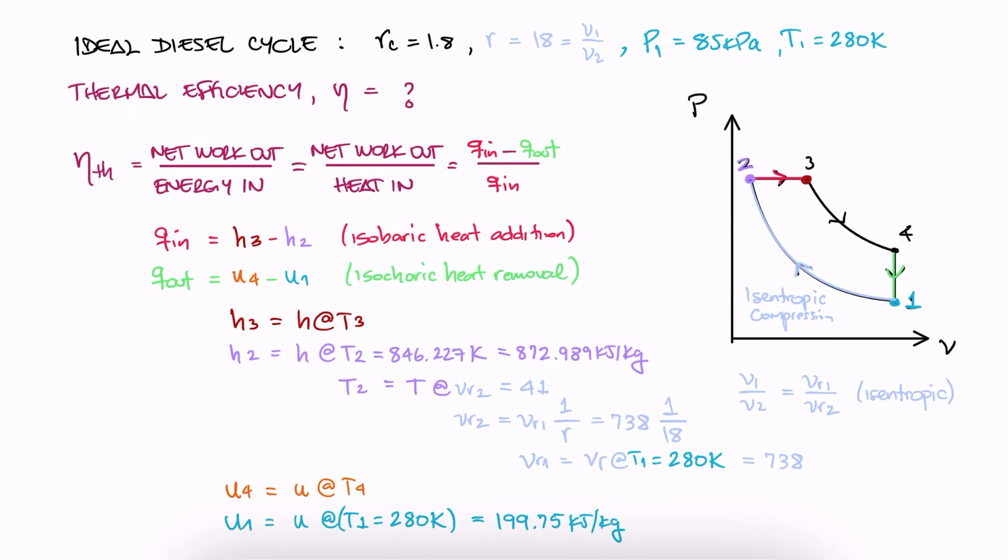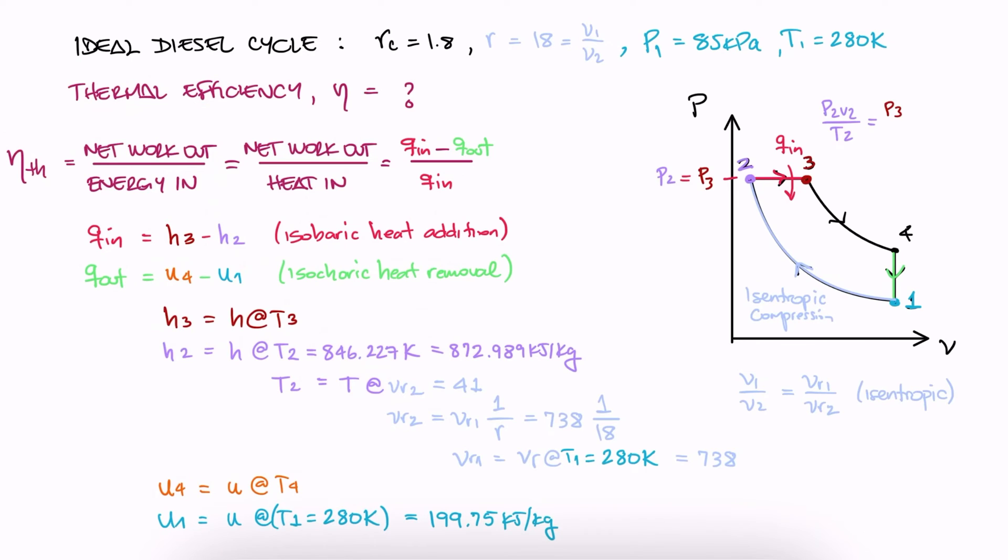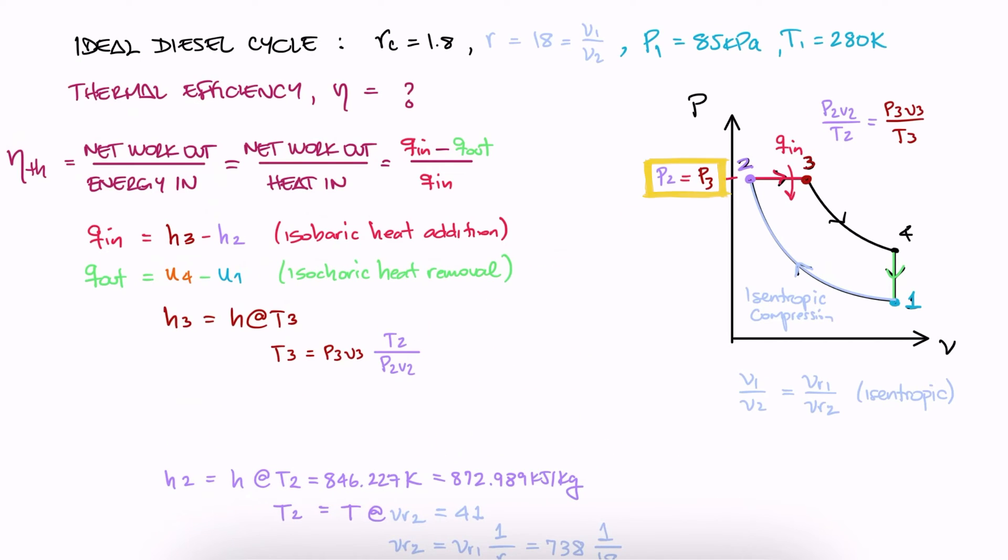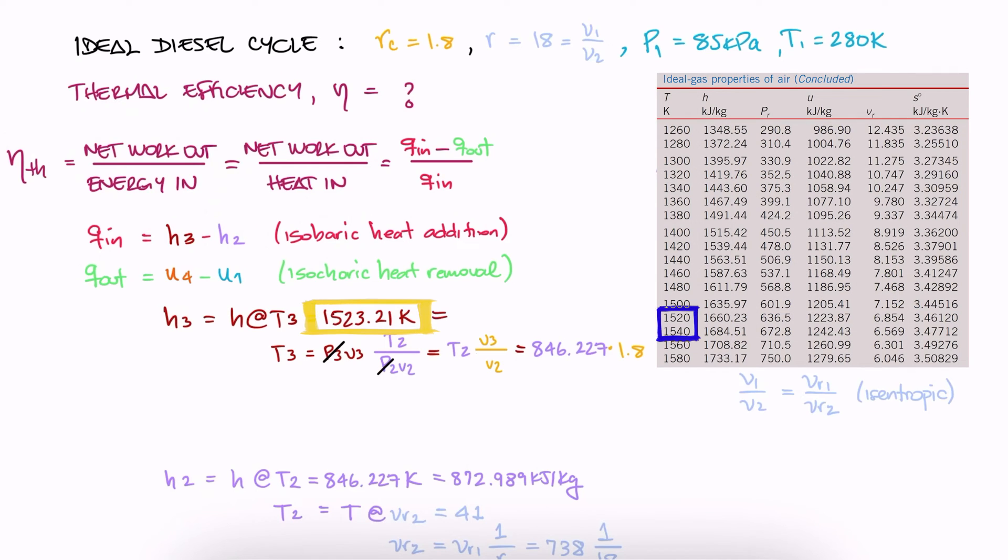From 2 to 3, we have isobaric heat addition. Since air is an ideal gas, we can solve for T3, and since it's isobaric, Ps cancel out. With T2 and the cutoff ratio, we calculate T3. And with T3, we go to the table and interpolate to find H3.